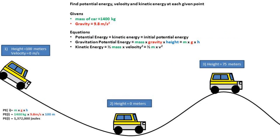Now that we have our equations rearranged, we are ready to start solving for each point along the car's path. For the first point, we are already given the velocity, so we do not need to solve for velocity. For the potential energy, we simply plug in our givens into the potential energy equation of mass times gravity times height to get 1,372,000 joules.